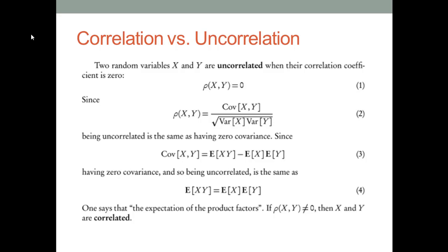If the rho value is less than 0, that means dataset Y will increase if dataset X decreases, and vice versa. If rho equals 0, the two datasets are uncorrelated — that means no matter how X changes, Y will not change.